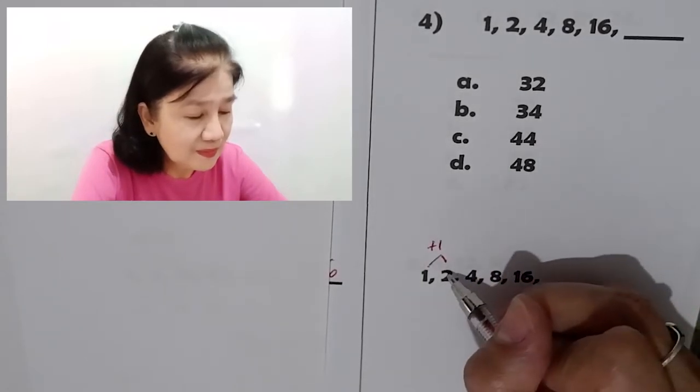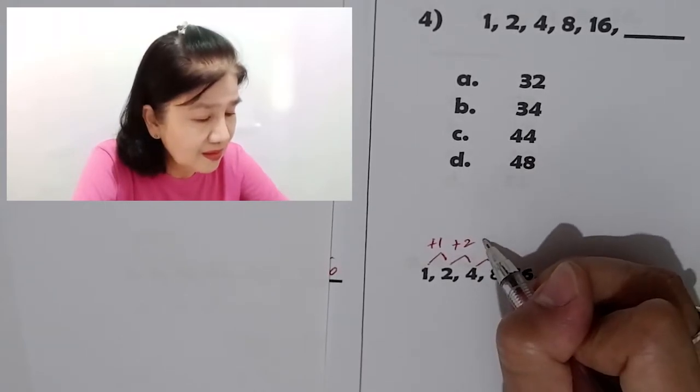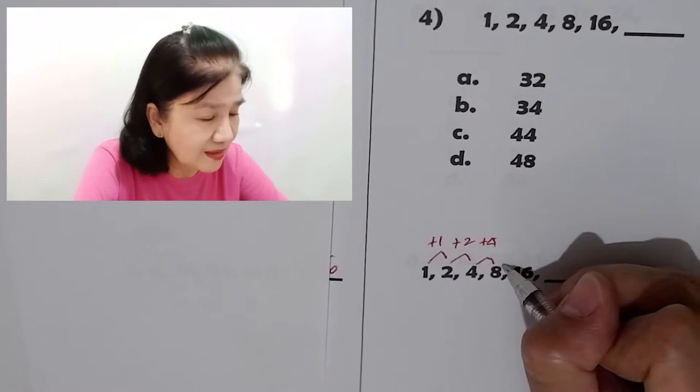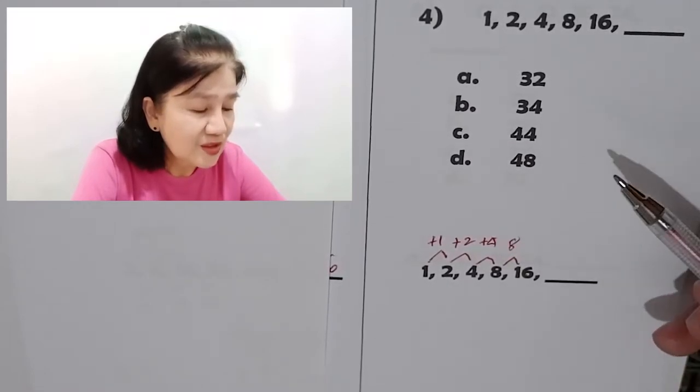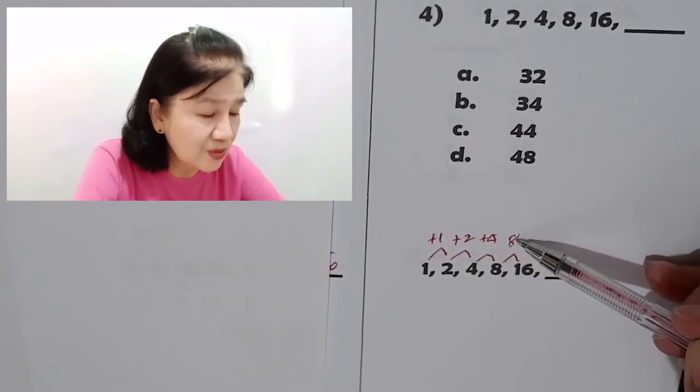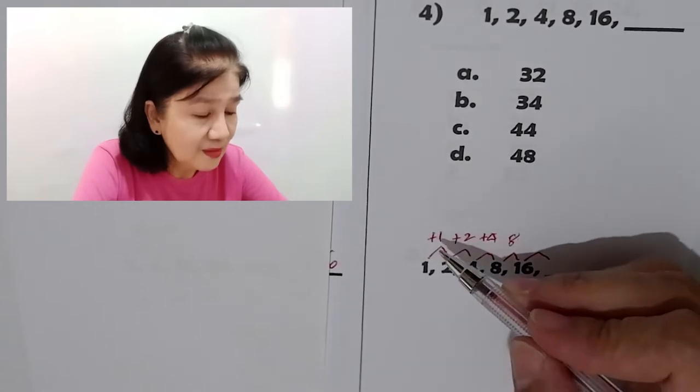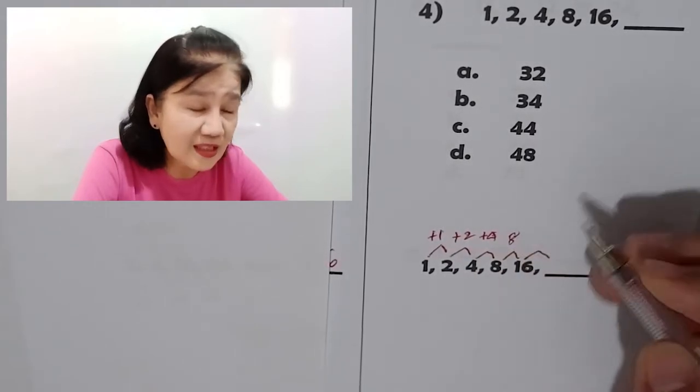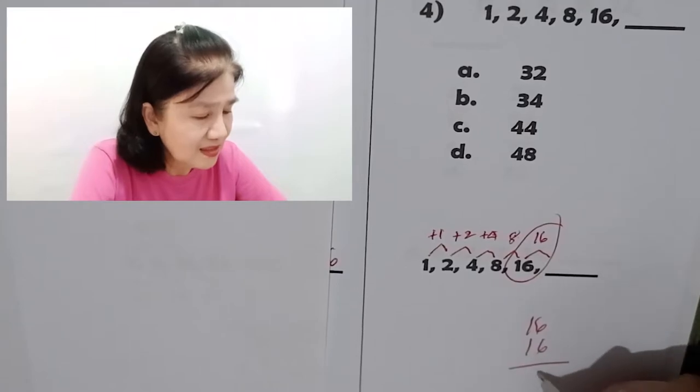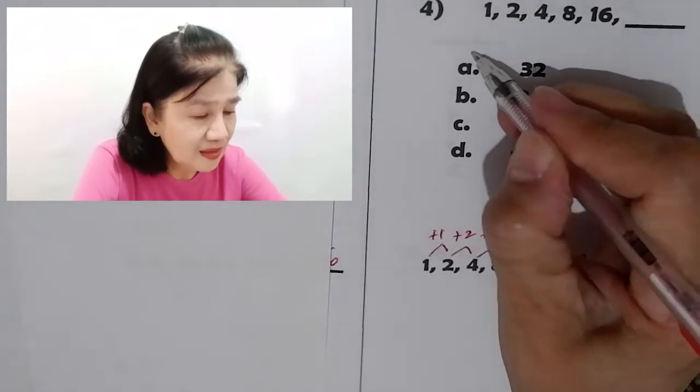1 plus 1 is 2. 2 plus 2 is 4, but this is 4 plus 4 is 8. Right? What do you think? 16 minus 8 is 8. So, what do you see here? So, 1 times 2 is 2. 2 times 2 is 4. 4 times 2 is 8. Right? What's the next number to be added? 8 times 2 is 16. Add this. 16 plus 16 is 6, 12, 2, carry 1, 32. So, the answer is 32. Letter A.